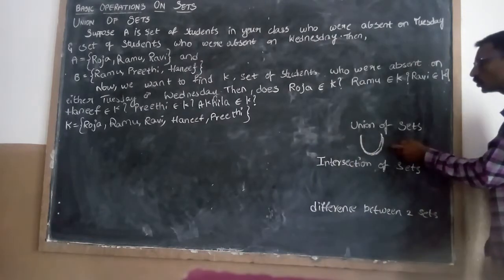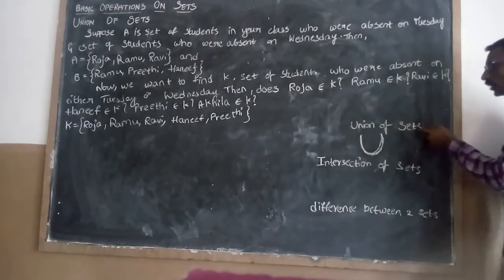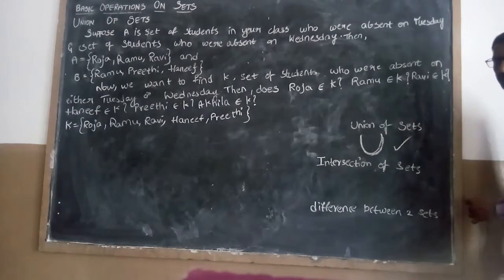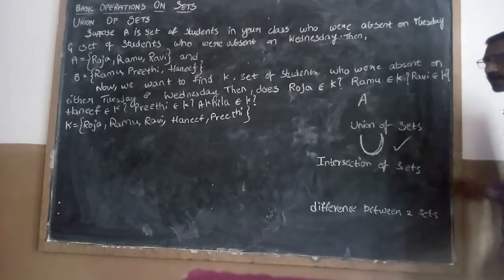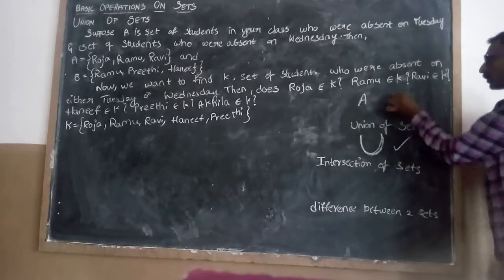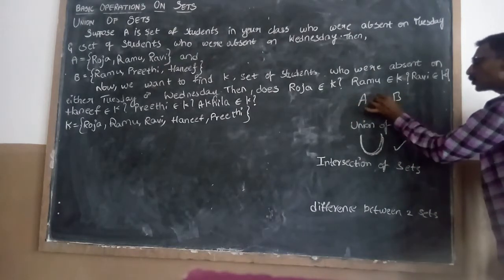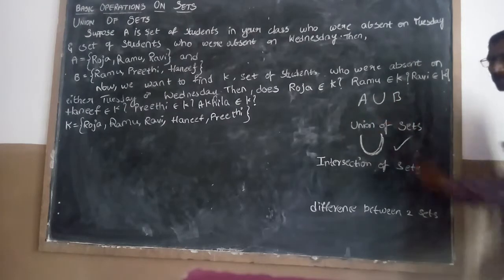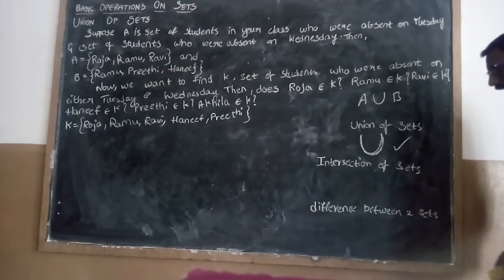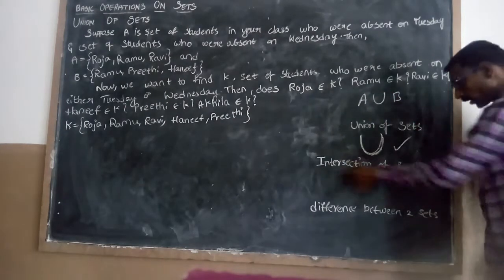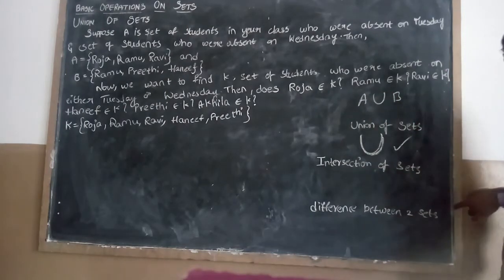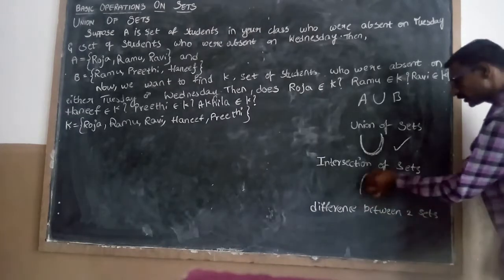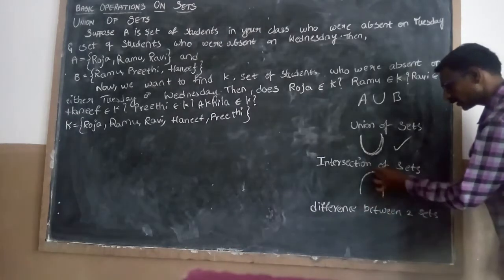Here we are using union. Union is denoted by U. Suppose my set A and set B — I would like to make their union. This is one operation. When we are going to discuss the intersection of sets, this is the same part as intersection.